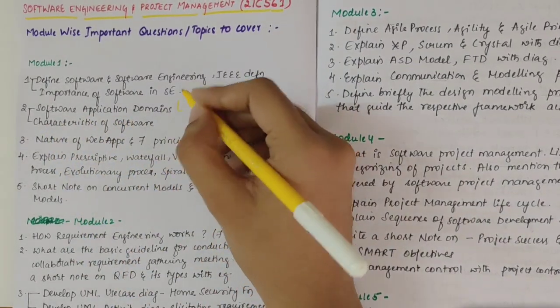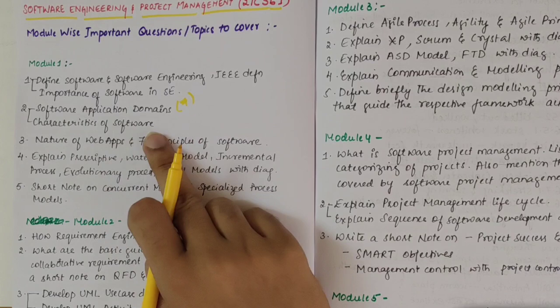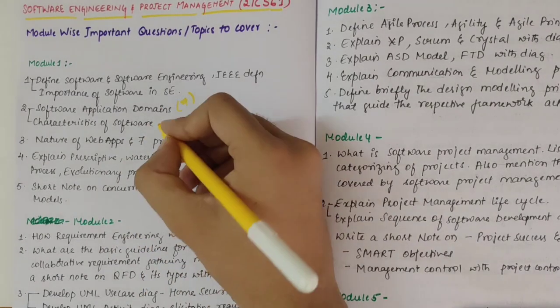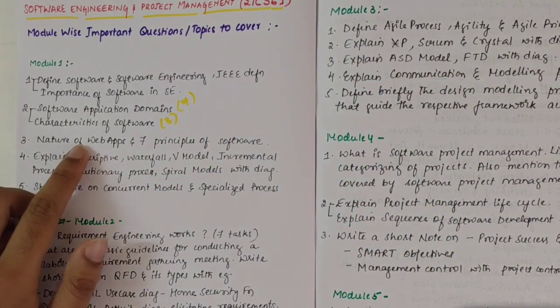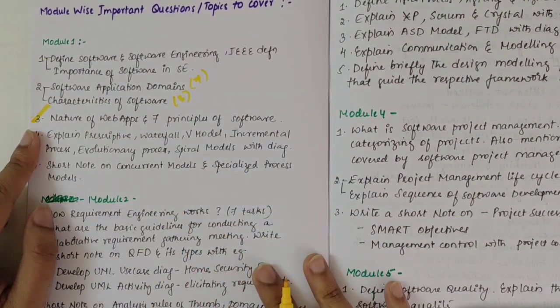Then we have software application domains - the 7 domains or 7 challenges followed by the 3 characteristics of software. Then we have nature of web apps and 7 principles of software. This is a must question to cover.